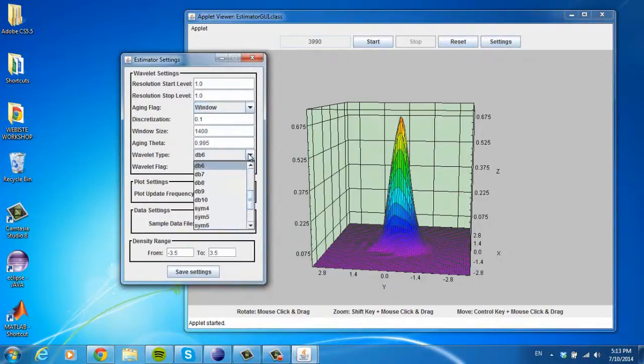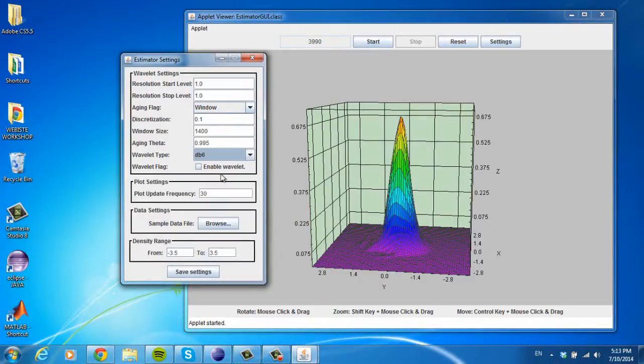The wavelet family can be selected. Generally, higher order wavelets give smoother estimates. We provide easy methods to edit the display. One can select how fine of a grid to plot over and how frequently to update the density displayed.